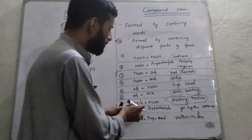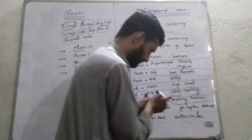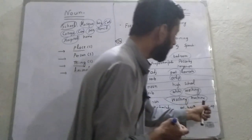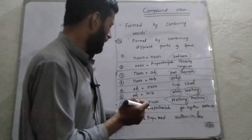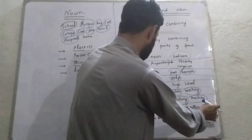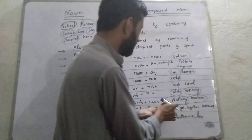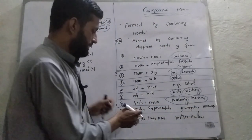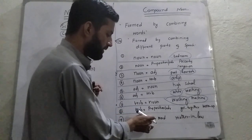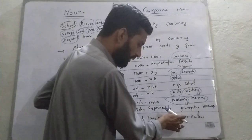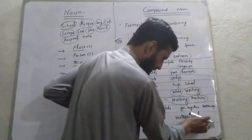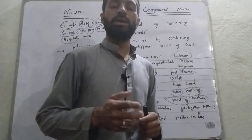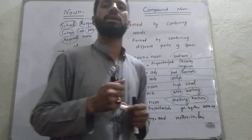The eighth case: whenever verb plus preposition or adverb occur — like 'get together' where verb and preposition combine, or 'warm up' where verb and adverb combine. The ninth and final case is verb plus preposition plus verb. So these are the nine cases in which we discussed how compound nouns are formed.